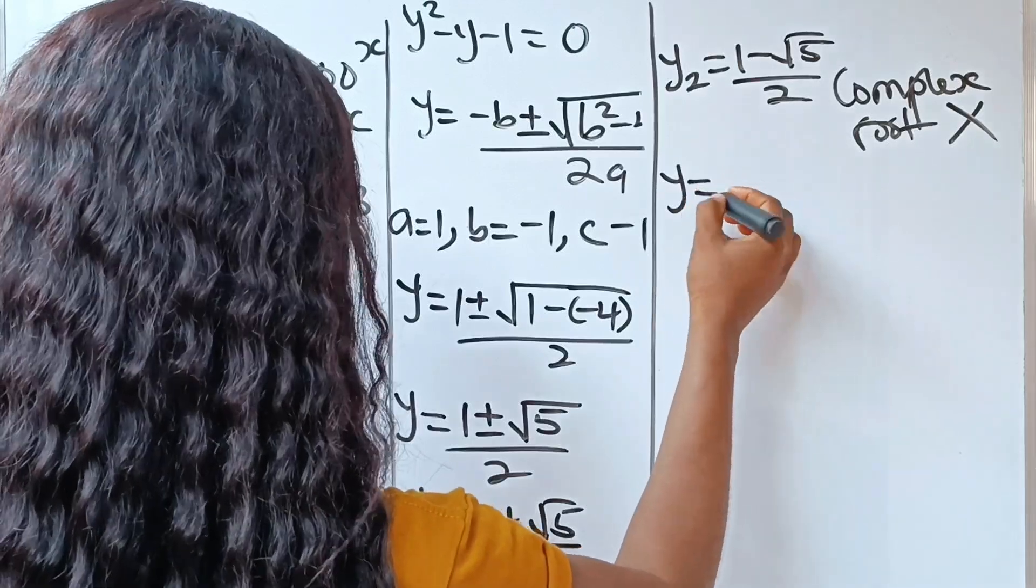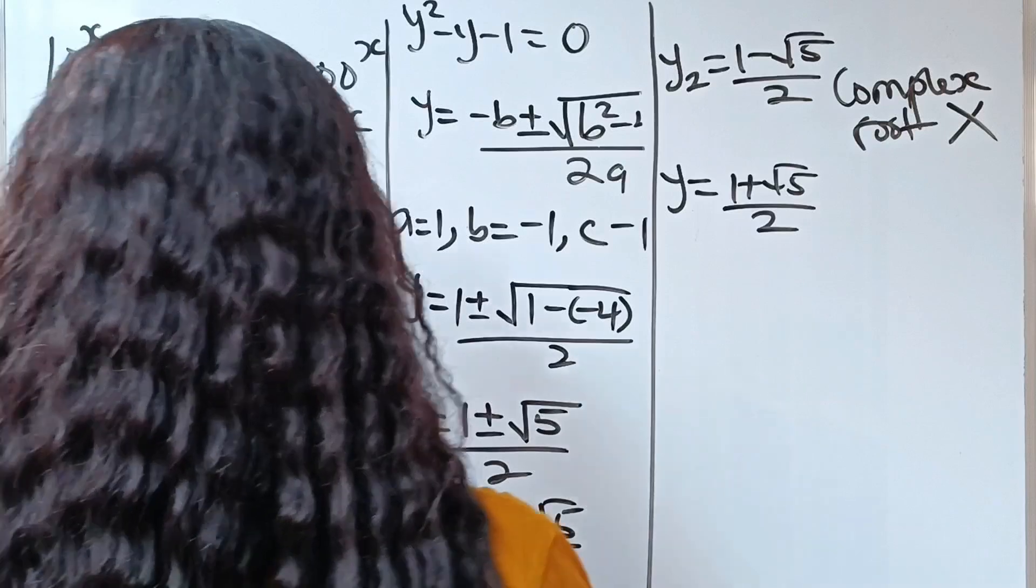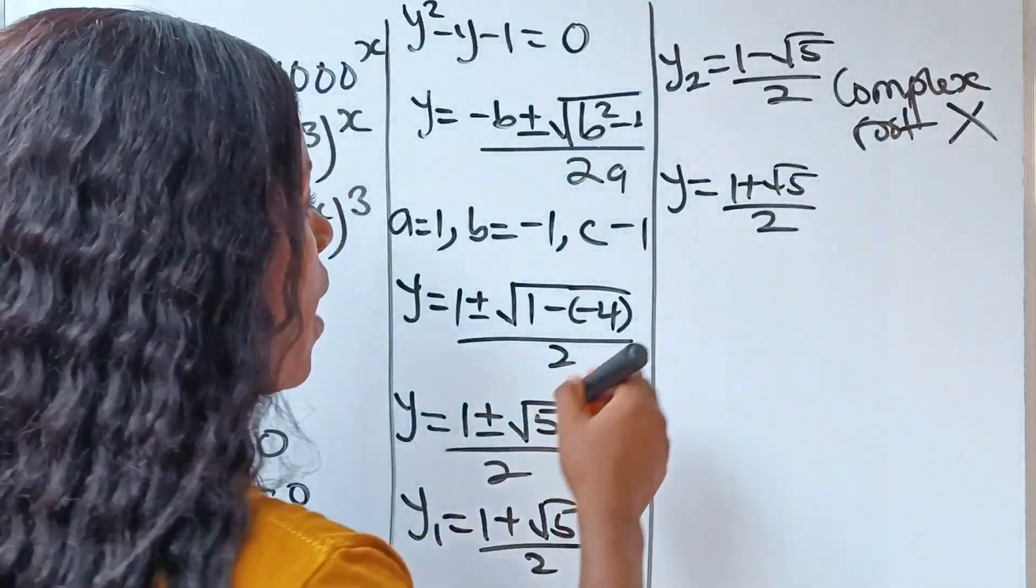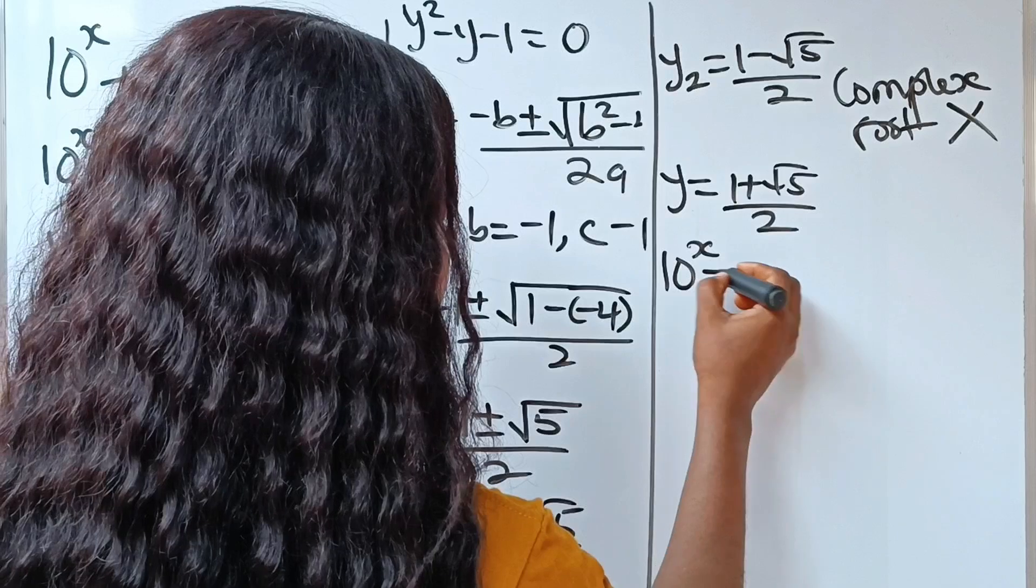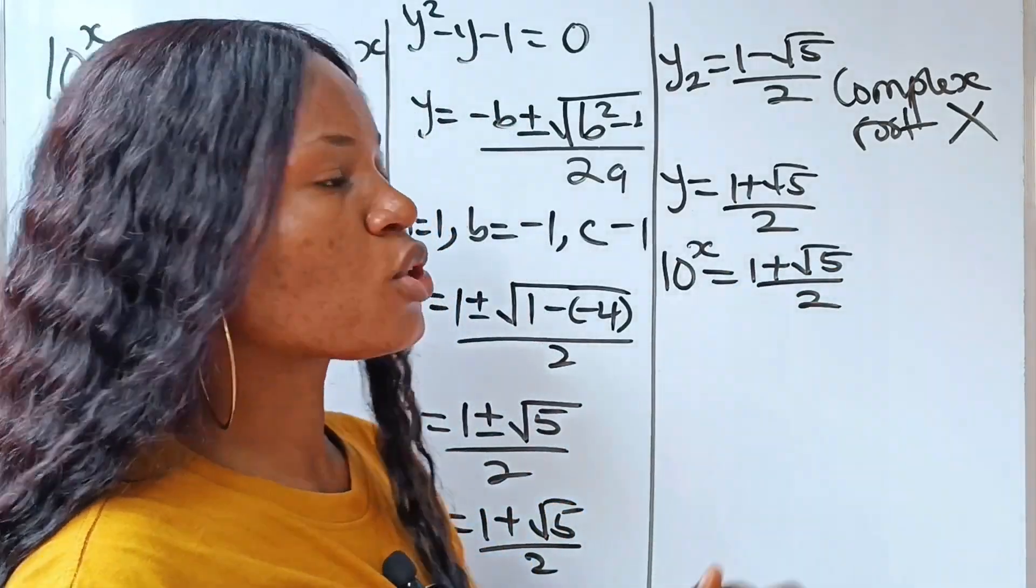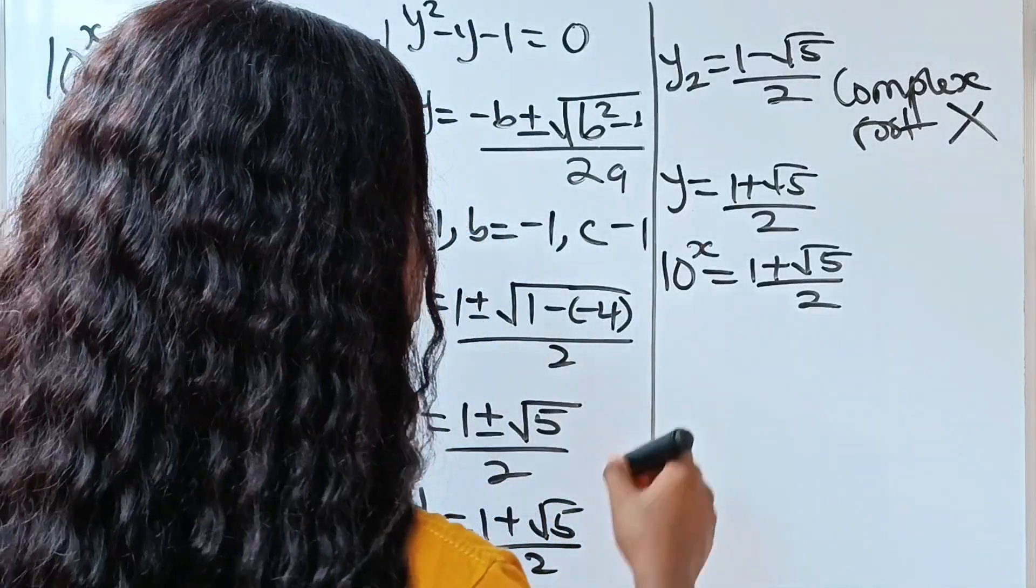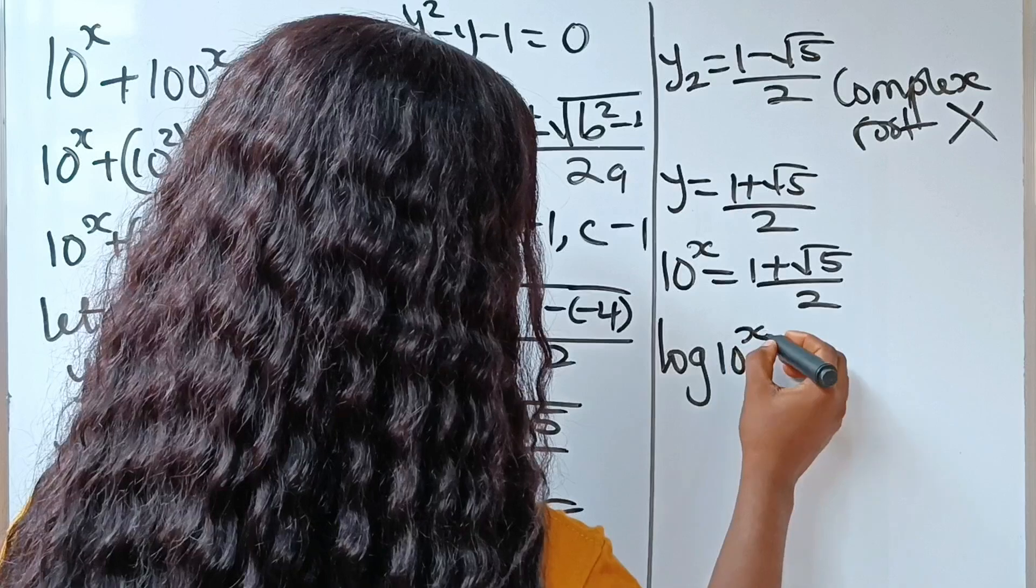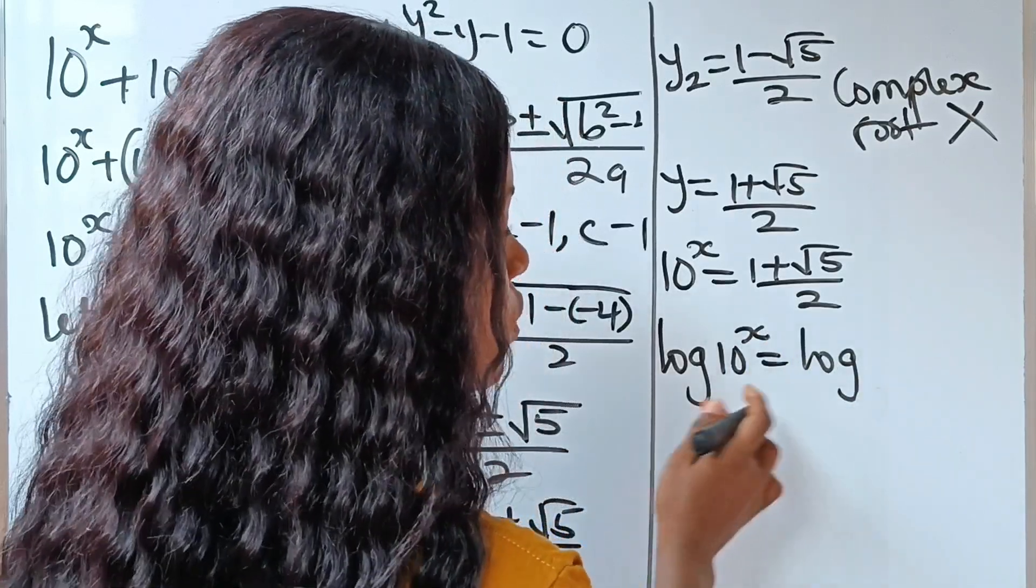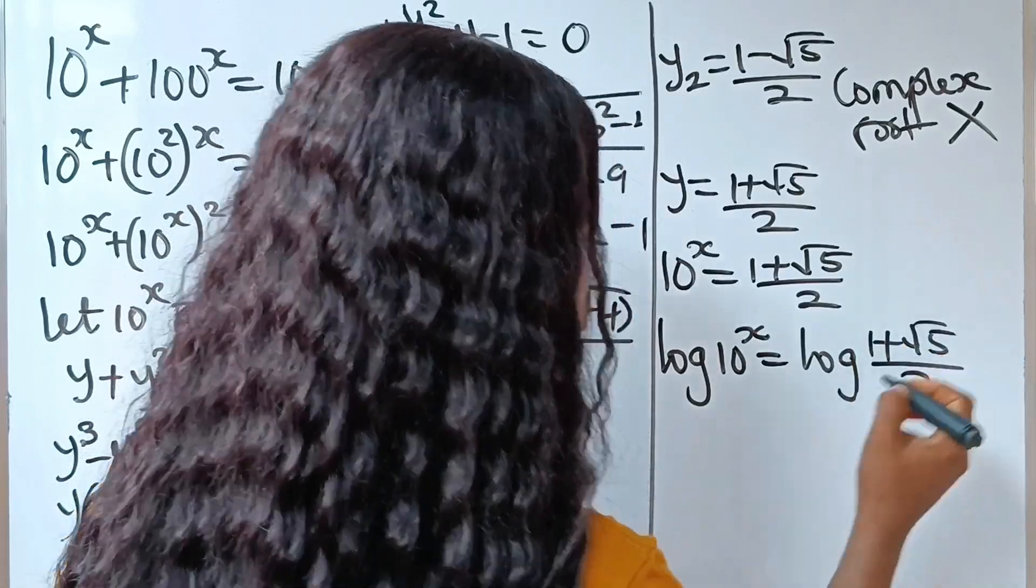Now recall that our y is equal to 10 to the power of x, right? So we write that 10 to the power of x is equal to 1 plus root 5 over 2. Now let's introduce log reading to both sides of this equation. If we do that, we have log 10 to the power of x is equal to log, that is log to base 10 for each of them, of 1 plus root 5 over 2.